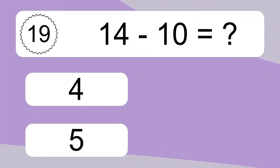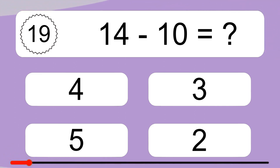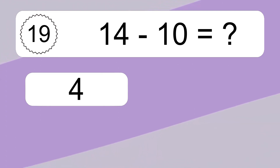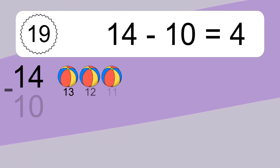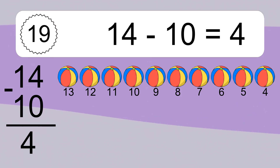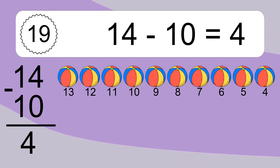14 minus 10 equals what? 14 minus 10 equals 4. Let's count it: 13, 12, 11, 10, 9, 8, 7, 6, 5, 4.